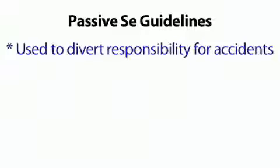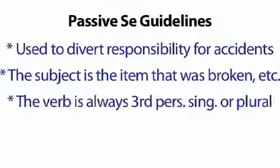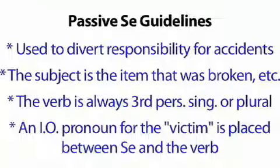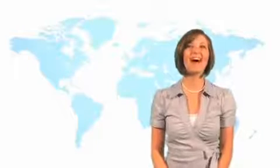Quick review on using se for unexpected events: it is used to divert some of the responsibility for an accident. The subject is the item that was broken, lost, forgotten, etc. The verb is conjugated to the item in the third person singular or plural. An indirect object pronoun for the victim of the accident is placed between se and the verb.